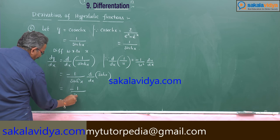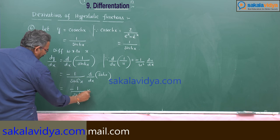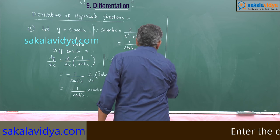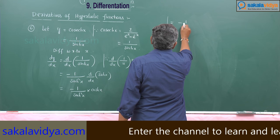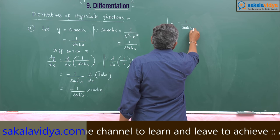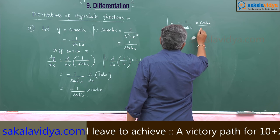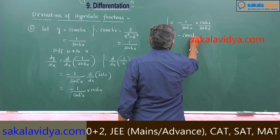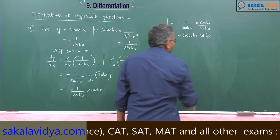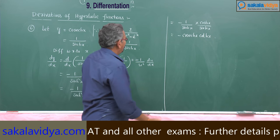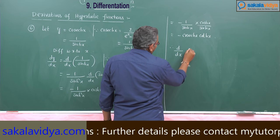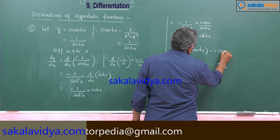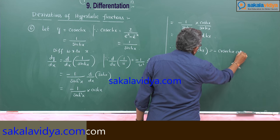So this gives minus 1 by sinh x into cosh x. This can be written as minus 1 by sinh x into cosh x over sinh x. This is nothing but minus cosecant hx into cot hx. Therefore, the derivative of cosecant hx is equal to minus cosecant hx cot hx.